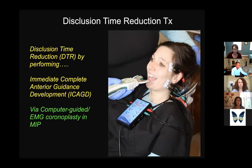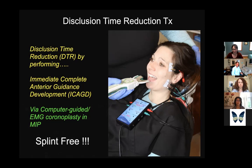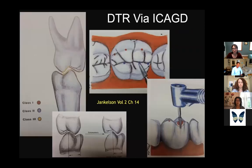The ICAGD procedure is essentially about engaging your canines the way we were designed. The posterior teeth cause hyperactivity, but when you engage a canine properly, all those forces stop — it's a fundamentally different neurological response. The goal is to get patients using their anterior teeth for guidance the way they were meant to. Various things can disrupt this: missing teeth, open bites, braces, orthodontics, fillings in the back. The great thing about this is it's splint-free — you don't need night guards or occlusal appliances.